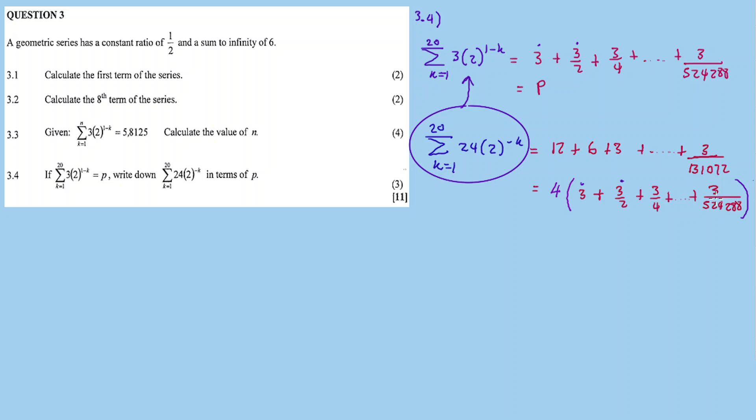This equals 4 times P. Remember, the pattern in the bracket is equal to P. So this sigma in terms of P is equal to 4 times P. So the answer for question 3.4 is 4P.